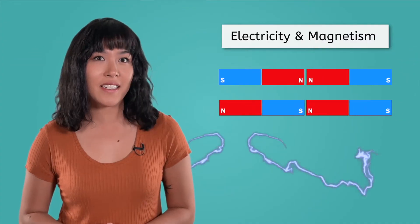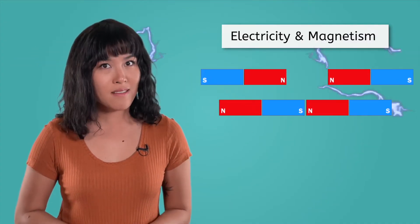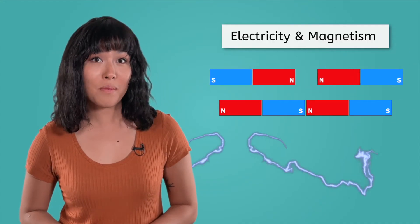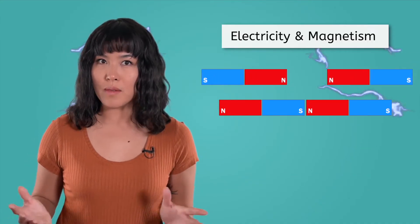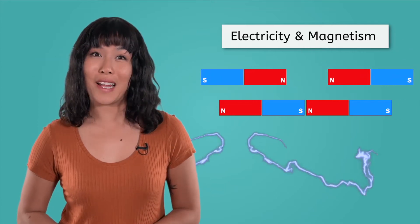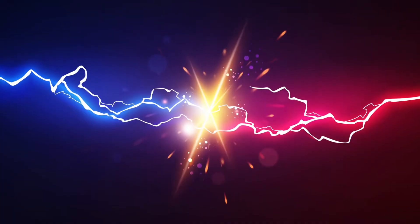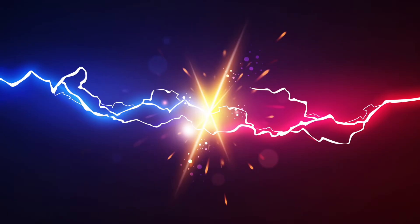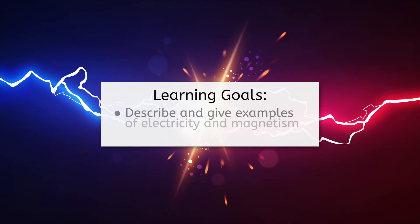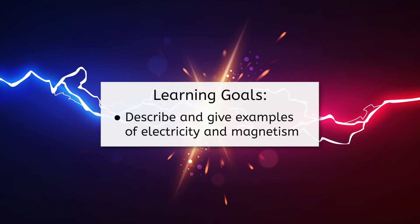I'm guessing you have at least a basic idea of what these two words mean, but do you know what causes electricity and magnetism, or why we would study both together in the same unit? That's what we'll start exploring today. But before we start zapping everything in sight, let's look at our goals for this lesson. By the end, you'll be able to describe and give examples of electricity and magnetism.